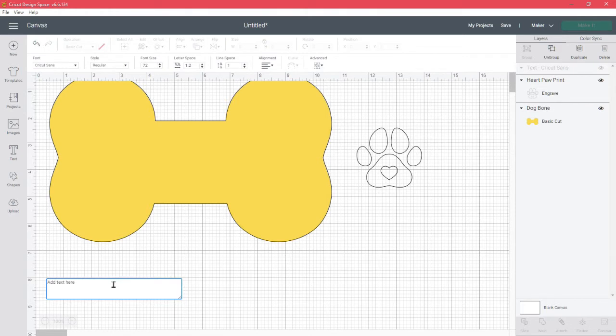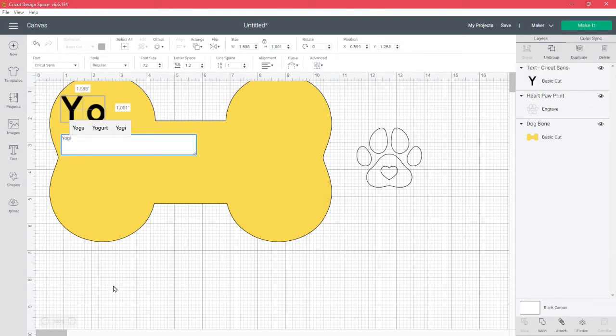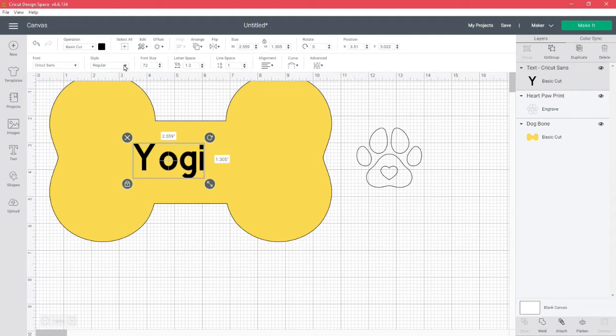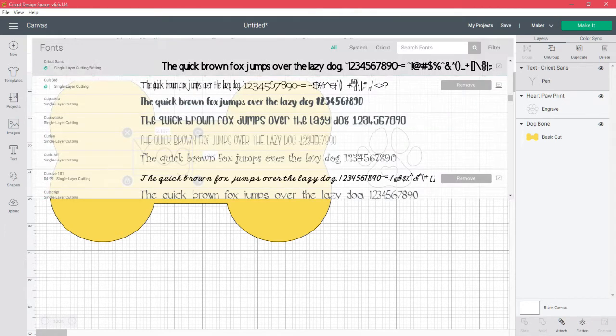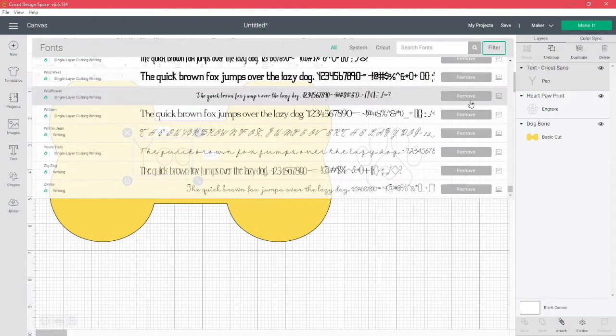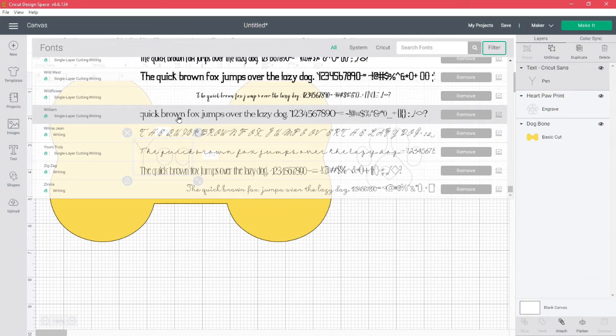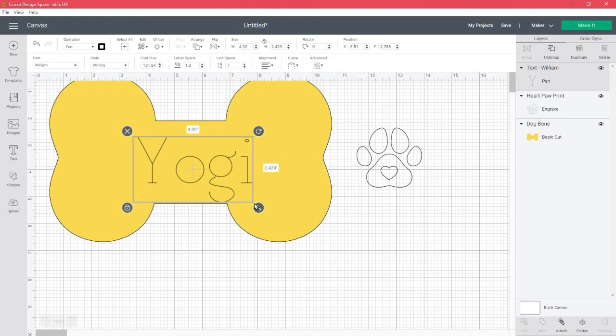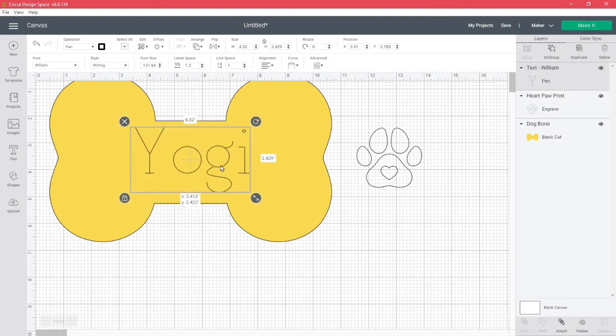And my first dog's name is going to be my big guy, which is Yogi. So now I need to find a text that I like. Because we are engraving, we need to find a single line text. So go into your fonts, go up here to your filter, and just go to writing.